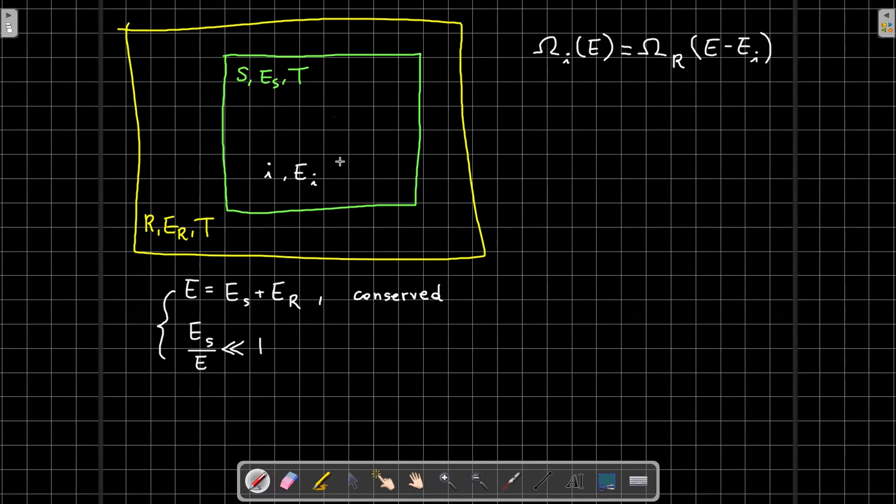So this is the number of microstates consistent with S being in the microstate i. But what if I don't tell you what microstate the system is in? What if I just want to know the number of microstates where the total energy is E? Well, in that case, I will simply have to sum over i. So sum over all the microstates that S can be in. So this will be equal to sum over i of omega_R of E minus E_i. So this tells us the number of microstates of the combined system with energy E.